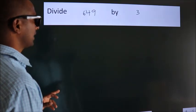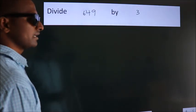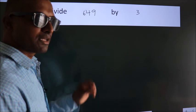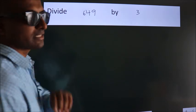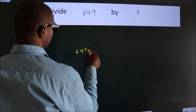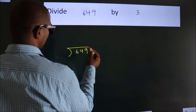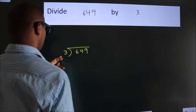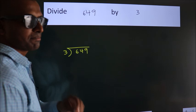Divide 649 by 3. To do this division, we should frame it in this way. 649 here, 3 here. This is your step 1.